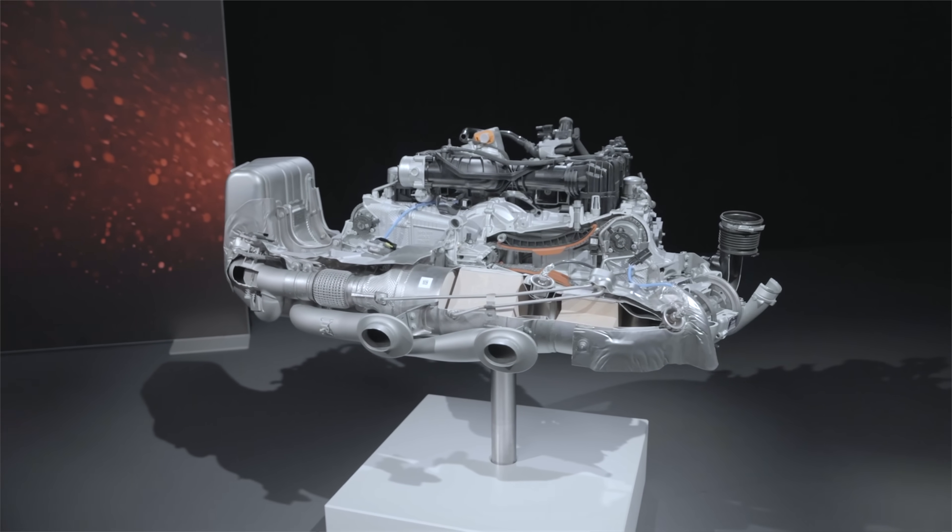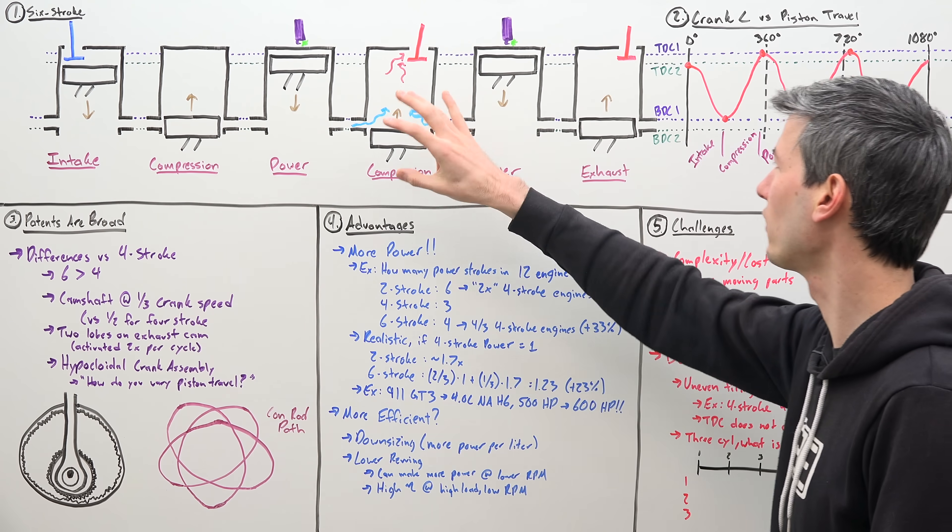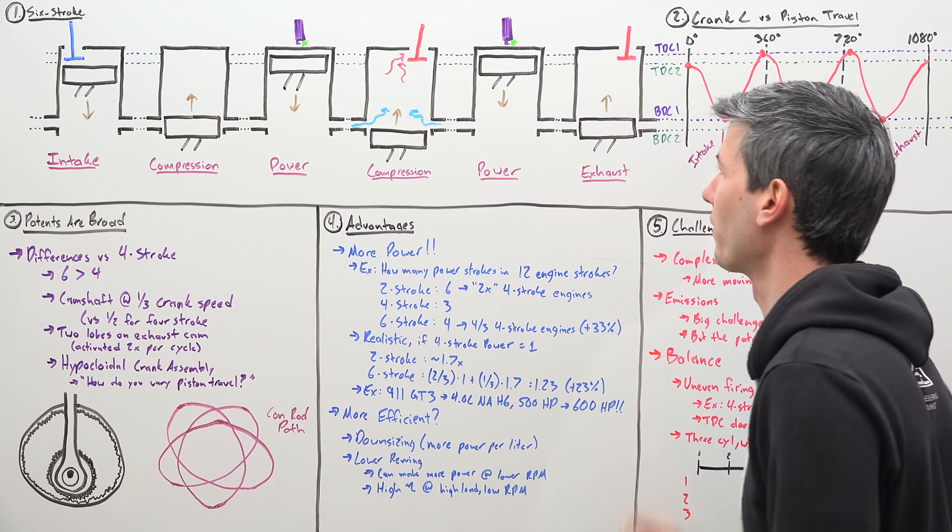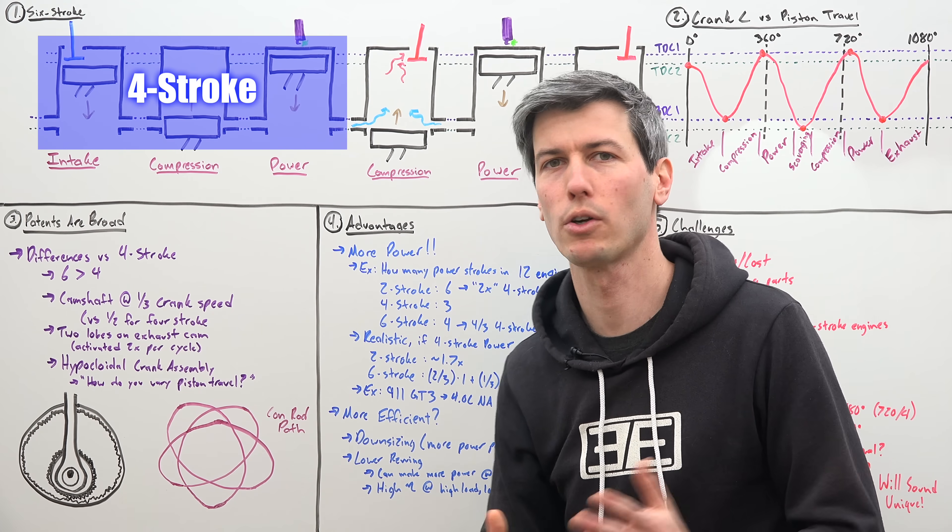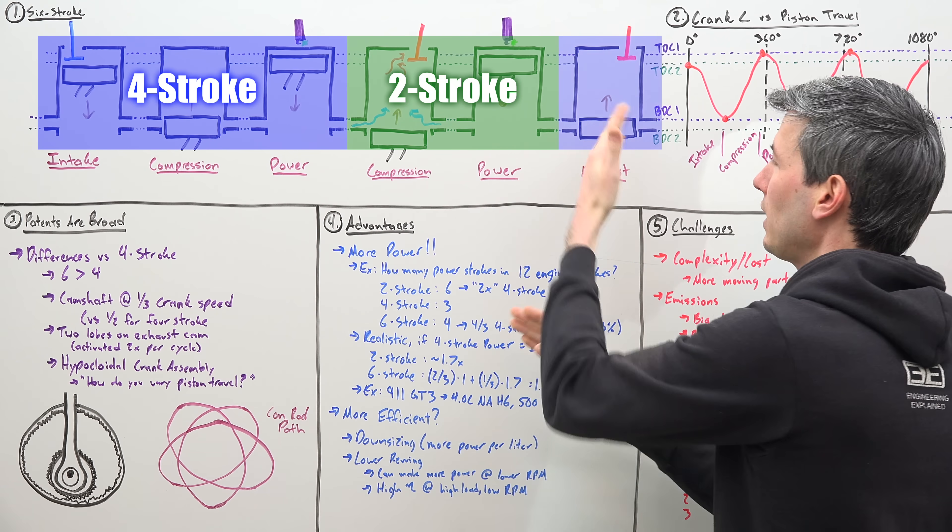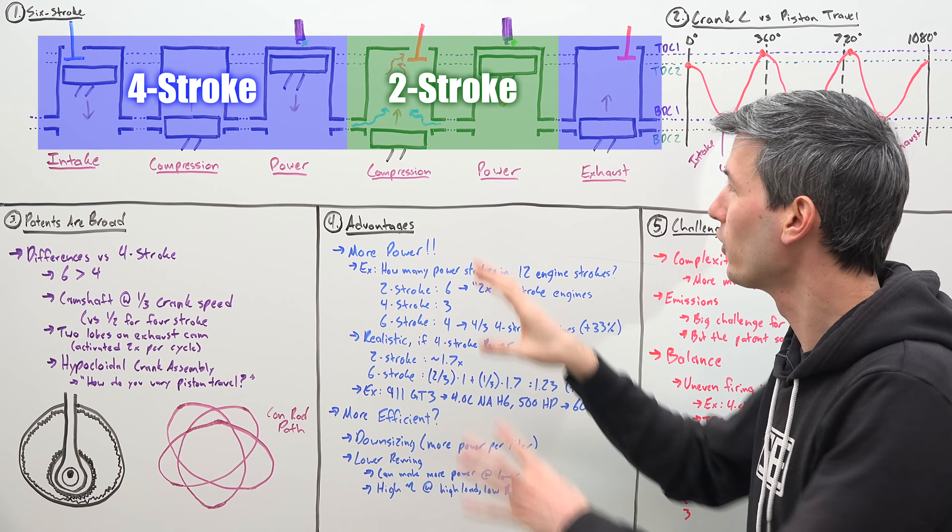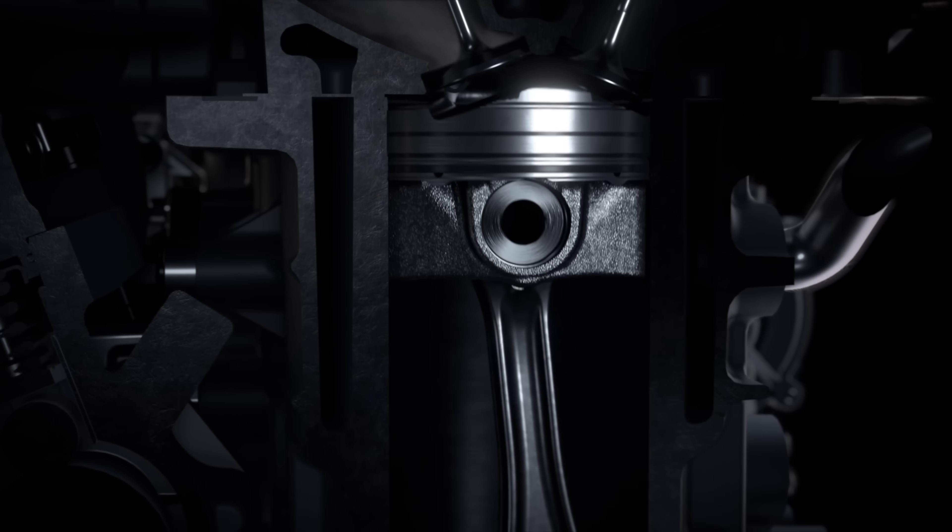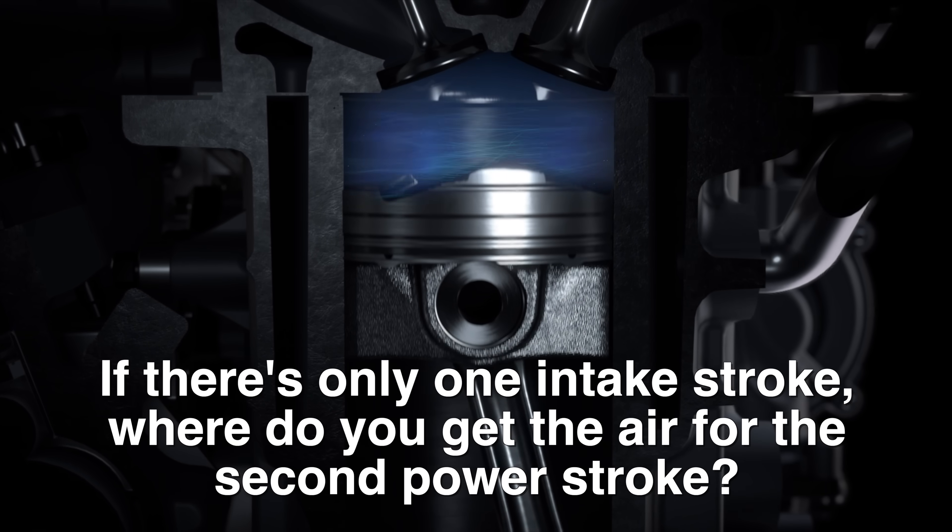So the easiest way to think about this engine is that we are combining a four-stroke and a two-stroke engine. So here we are looking at the six individual strokes of this engine, just looking at one cylinder and what it does through each of the six strokes. Now, you're probably wondering if we only have one intake stroke, where do we get the air for the second power stroke?